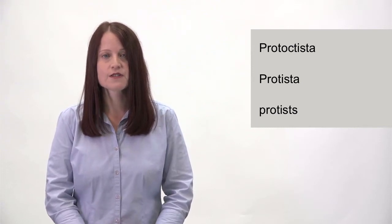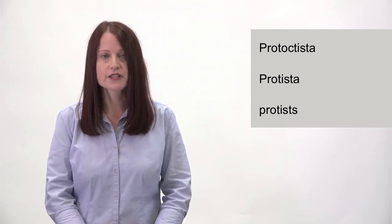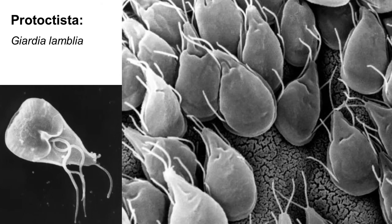In the selection of protoctista I'm about to show you, I made sure to cover all the major lineages. This is a single cell protist with the beautiful name Giardia lamblia, but it's not so beautiful to have inside of your gut, as I can attest from experience. Giardia lamblia and other diplomonads are very special because each unicellular individual has two nuclei.